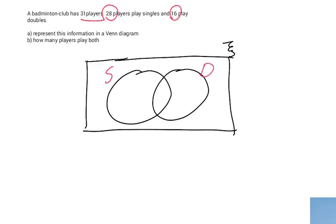I'm going to look again at the question. We have 31 players in total, and we can assume that everybody plays either singles or doubles or both. Because why would you become a member of a badminton club and not play badminton? So there are no players who don't belong to either singles or doubles. Everybody belongs in either one of these circles, and some of them in both.